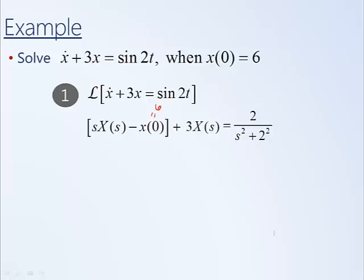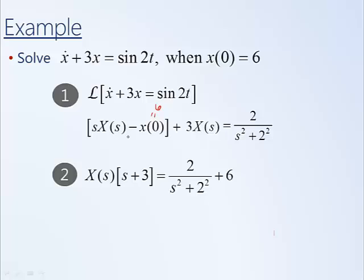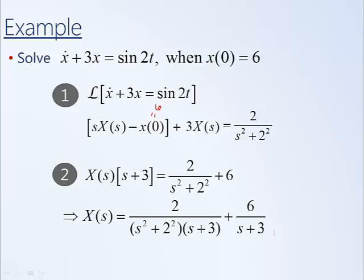The next step is to solve this algebraic equation for X of s. We have a negative 6 which we can add to the right-hand side. We are then left with s times X of s and 3 times X of s. We have a common factor of X of s that we can factor out, leaving us with the quantity s plus 3. Then to isolate X of s we divide through by s plus 3. This 6 comes from the initial condition and the other term comes from the forcing sine input, so the two terms of X of s represent the response to the input and the response to the initial condition.